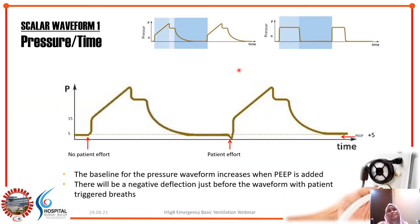Additionally, you can observe the baseline. When PEEP is set, for example at 5, you can see the baseline increases from zero. You can also determine your driving pressure from this waveform — your driving pressure is P-plat minus PEEP, and you don't want it to be more than 15.